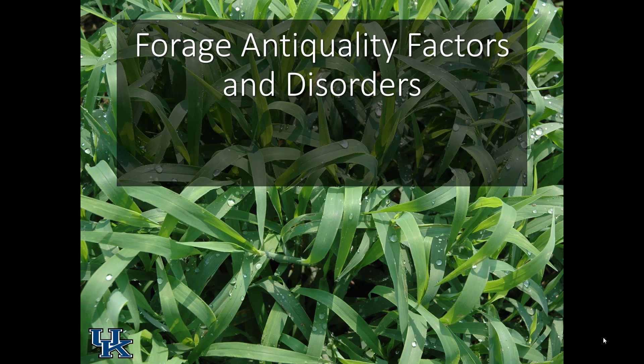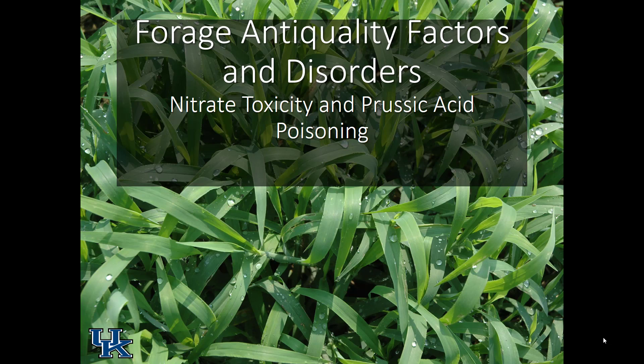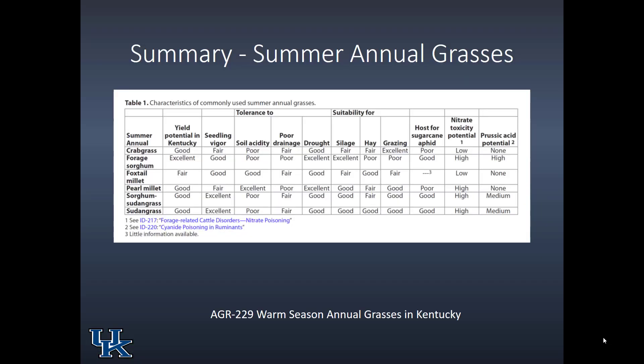Welcome back to PLS 510. Today we're going to take up the topic of forage anti-quality factors and disorders. The first two we will take up are nitrate toxicity and prussic acid poisoning. First, I'd like to tie this lecture back to the summer annual grass lecture that precedes it, by pointing you to this table which is at the end of our publication AGR 229, the overview publication on warm season annual grasses for Kentucky. This is a table of characteristics of our commonly used summer annual grasses.